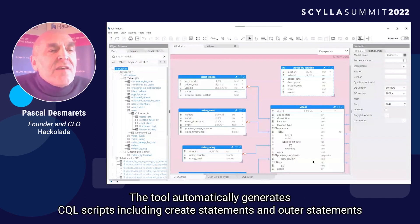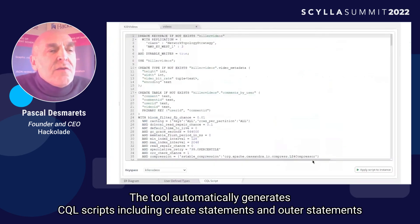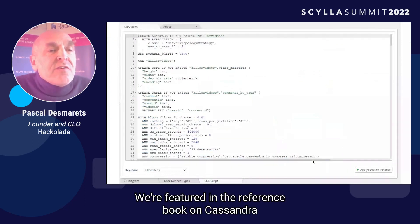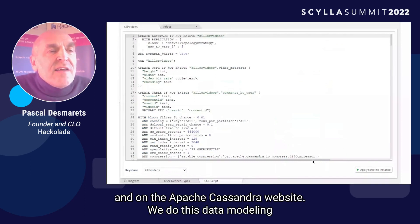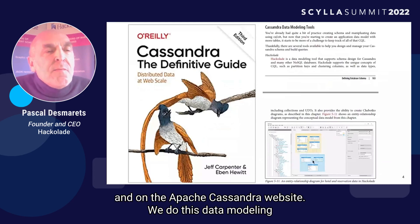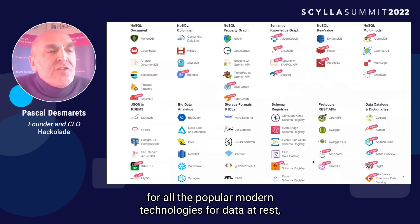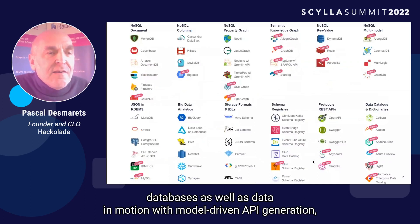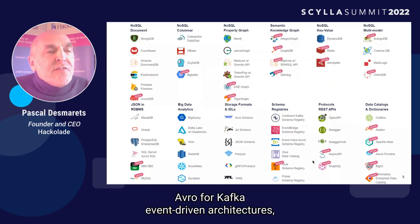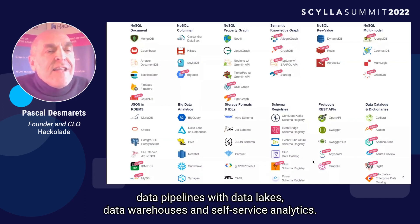The tool automatically generates CQL scripts, including create statements and alter statements during schema evolution. We're featured in the reference book on Cassandra and on the Apache Cassandra website. We do this data modeling for all the popular modern technologies for data at rest, databases, as well as data in motion with model-driven API generation, Avro for Kafka event-driven architectures, data pipelines with data lakes, data warehouses, and self-service analytics.